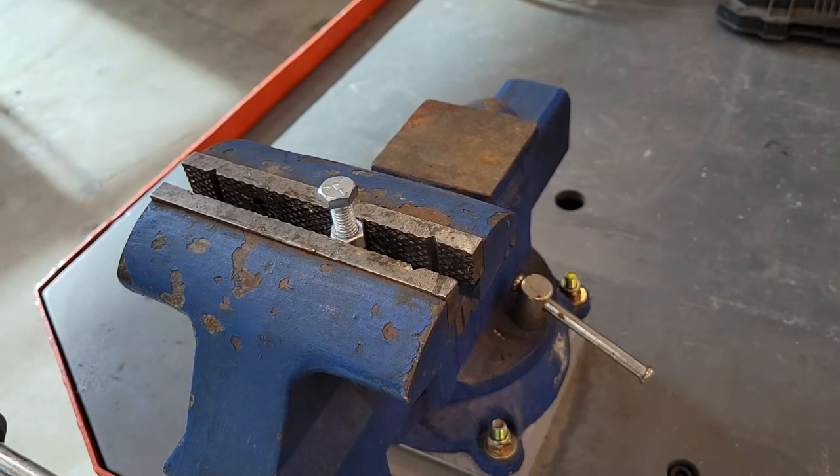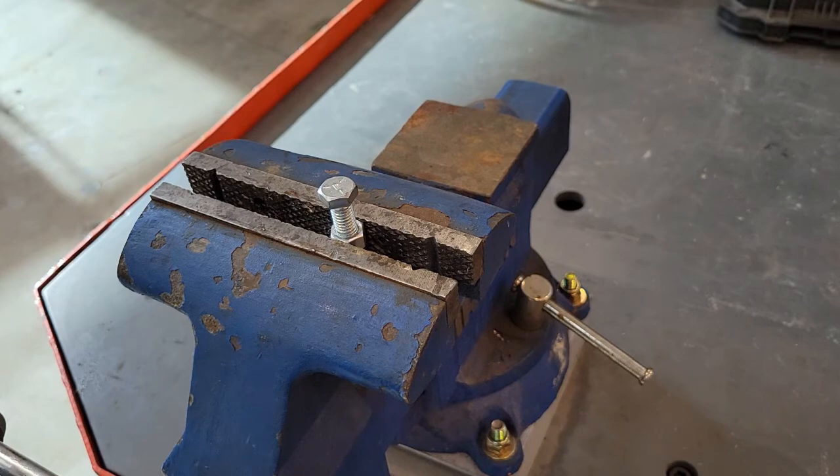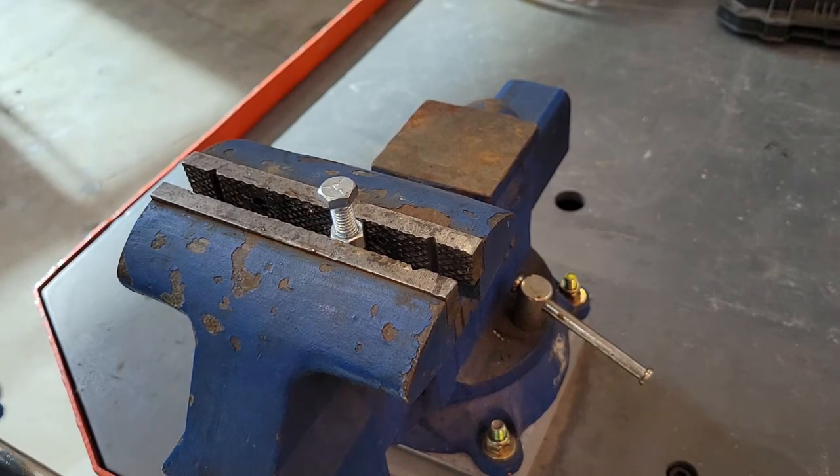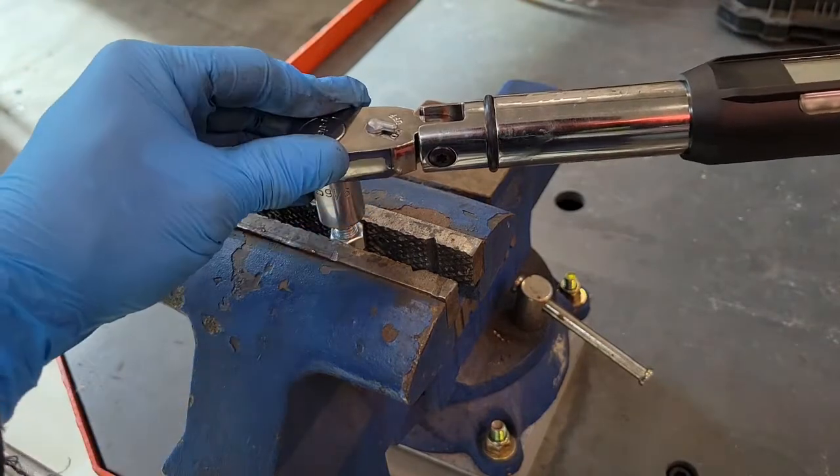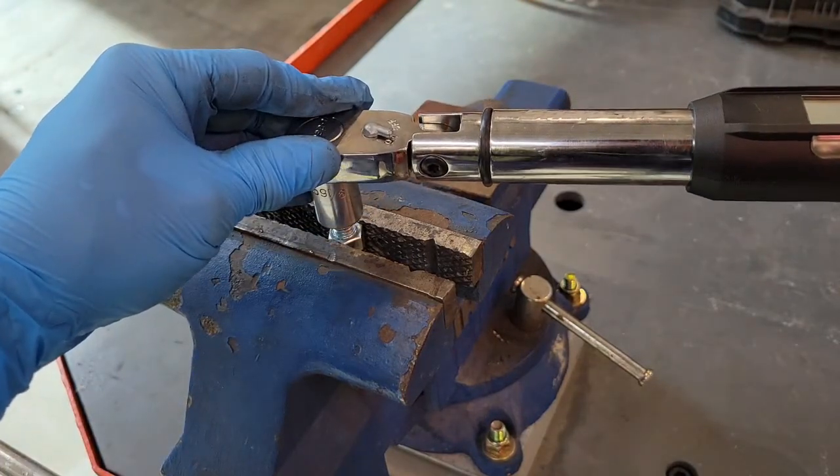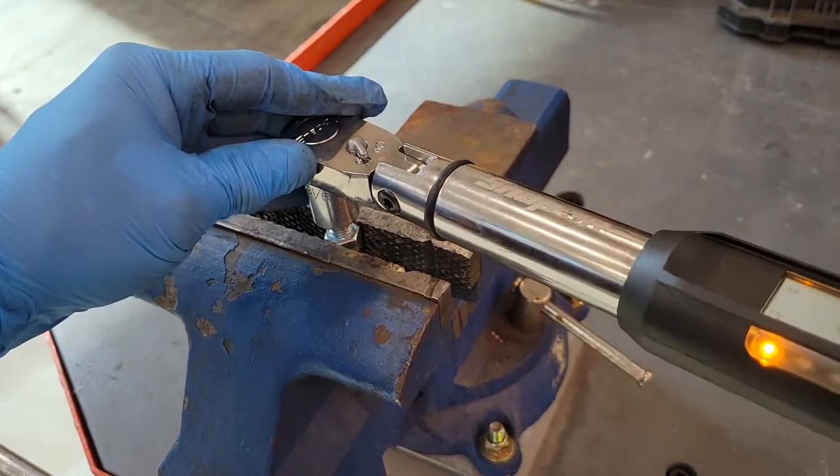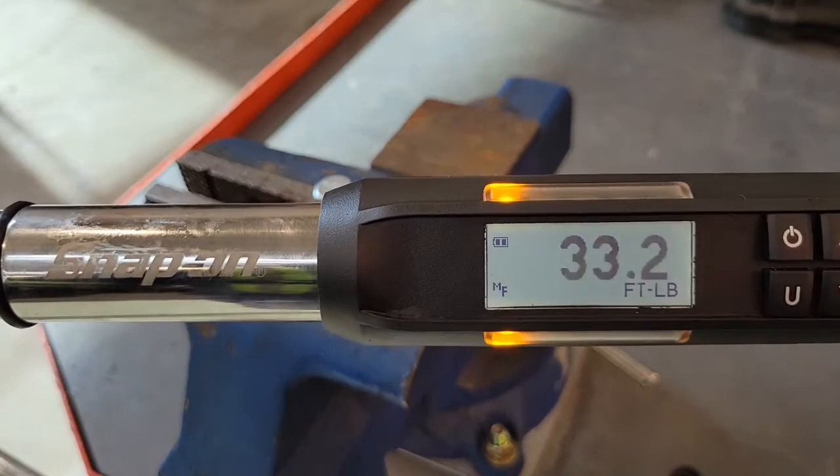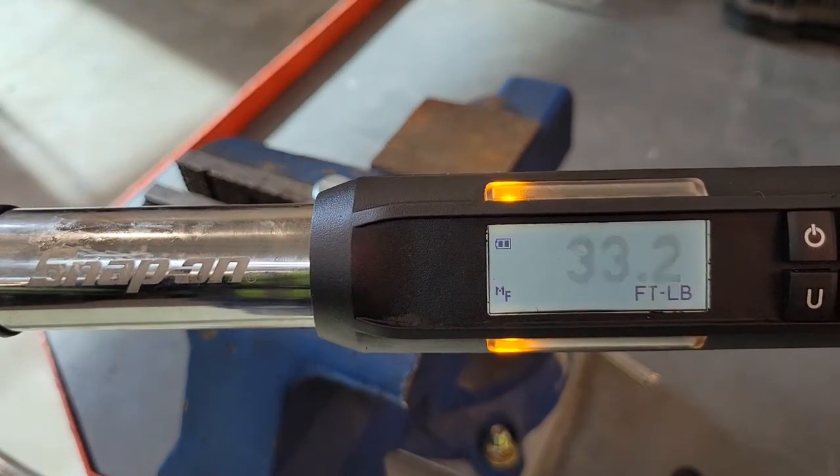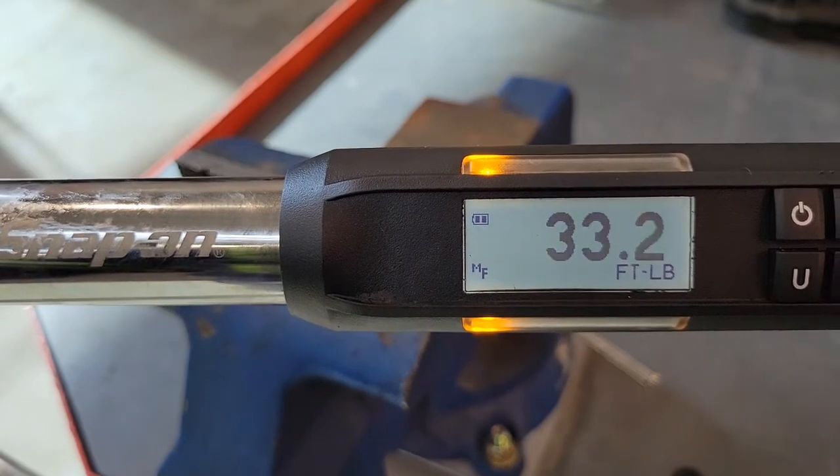Now the nut with the super glue on it. What's everybody going to think? Is that going to work in place of thread locker if you're in a pinch? Only one way to find out. Well, it's moving. Wow. 33.2 foot pounds for super glue compared to Loctite.